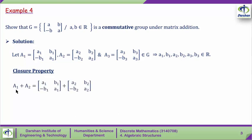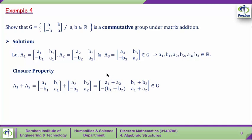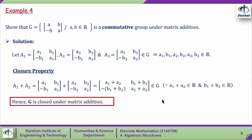For closure, we take the addition of the first two matrices A1 plus A2. Addition of two matrices means addition of corresponding entries, giving us [a1+a2, b1+b2; -(b1+b2), a1+a2]. This matrix is also a 2×2 matrix with each entry from R, since a1+a2 is in R and b1+b2 is in R. Therefore this matrix is an element of G, and hence G is closed under matrix addition.